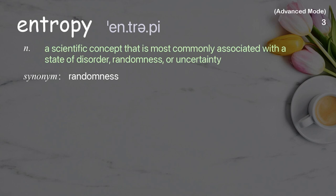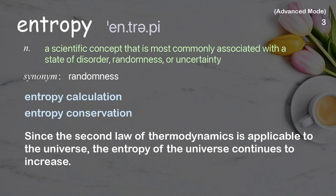Entropy: a scientific concept that is most commonly associated with a state of disorder, randomness, or uncertainty. Examples: entropy calculation, entropy conservation. Since the second law of thermodynamics is applicable to the universe, the entropy of the universe continues to increase.